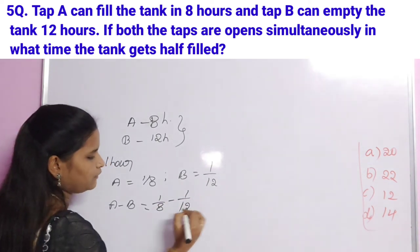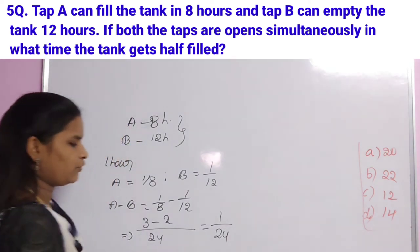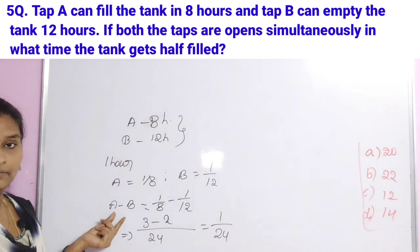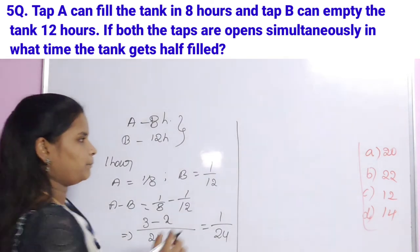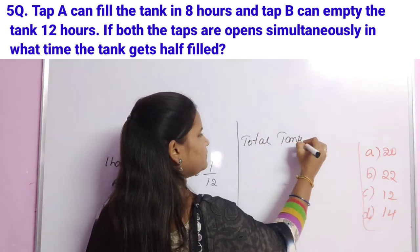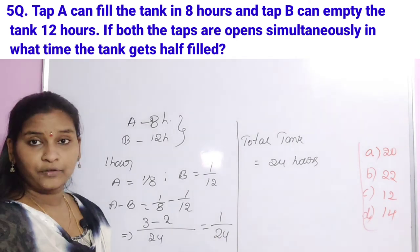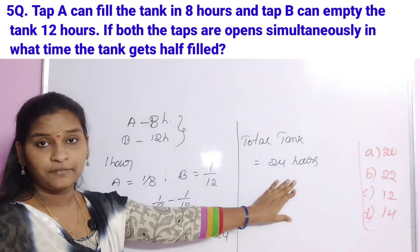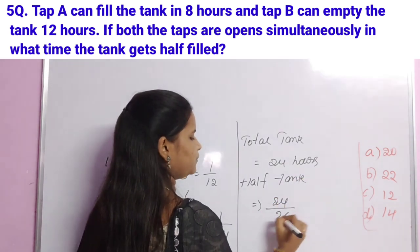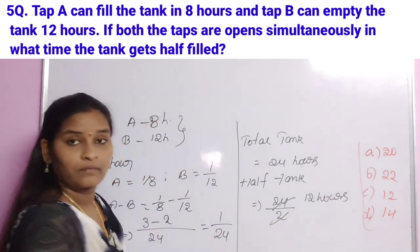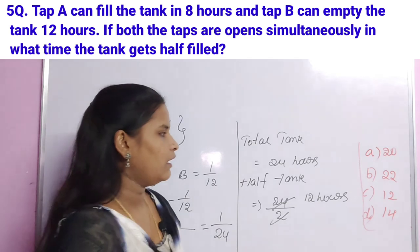LCM of 8 and 12 is 24. So 3 minus 2 over 24 equals 1/24 per hour filled. With both taps open, the full tank fills in 24 hours. Since 1/24th fills per hour, the full tank takes 24 hours. Therefore, half the tank fills in 12 hours. Option C is the correct answer.